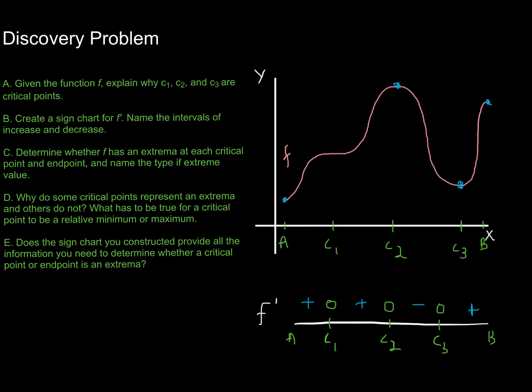This is essentially the first derivative test. All you have to do is create the sign chart of your derivative, and based on the information in the sign chart, you can decide whether a critical point is going to be an extremum or not. This is going to be incredibly useful, and now we want to put it into clear language so we know exactly what the derivative test says and how to execute it.